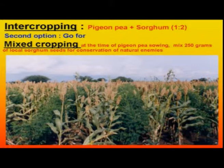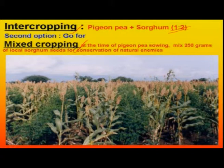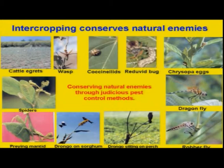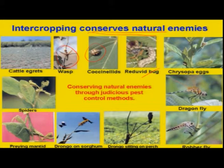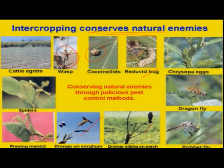Another cultural practice is intercropping or mixed cropping with pigeon pea and sorghum. If intercropping, a 1:2 row ratio is recommended. If a farmer wants mixed cropping, we advise 250 grams of sorghum seeds to be mixed with the red gram for sowing. Intercropping or mixed cropping mainly helps in the conservation of natural enemies. You can see in this graph clear-cut various predatory species like wasps, coccinellids, reduviid bugs, chrysoppa, and predatory birds like the black drongo, significantly reducing the pest population.